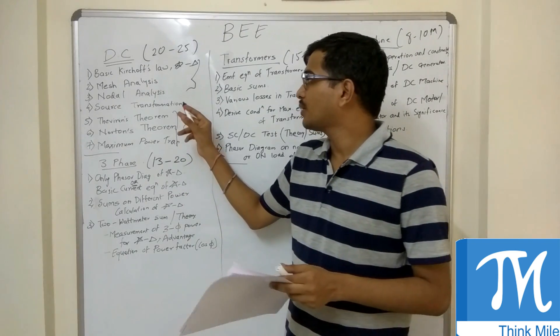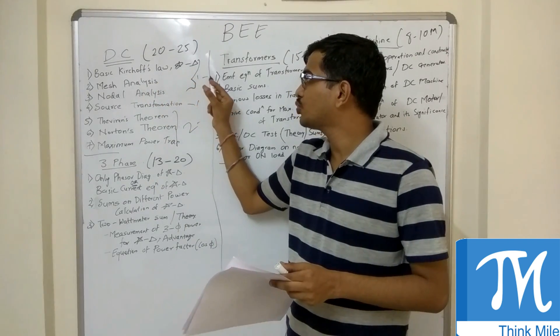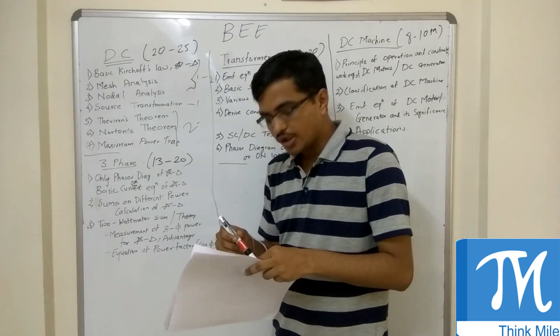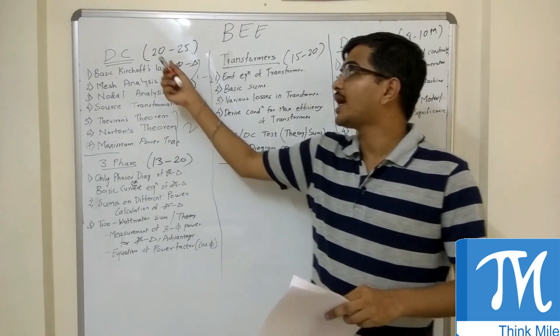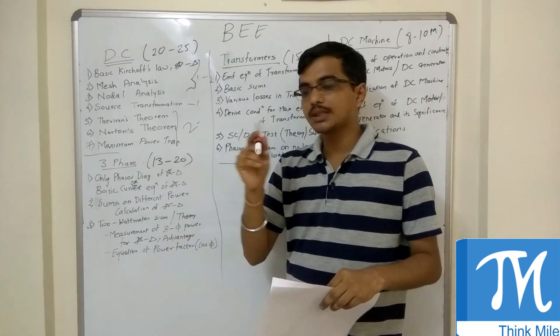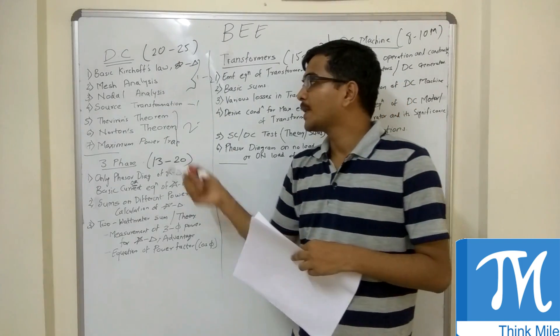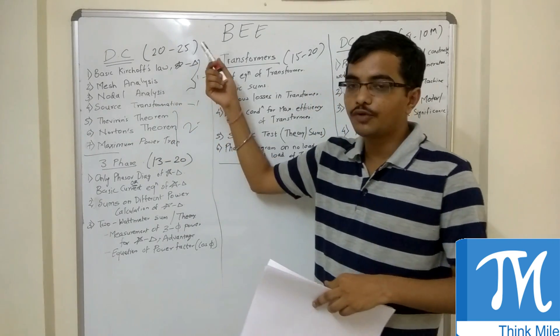So overall if you do DC you can score around 20-25 marks very easily. This I am not considering the option marks. If you select proper questions, around 20-25 marks you can score in DC. Around 40 marks paper is asked on DC, 35 to 40.